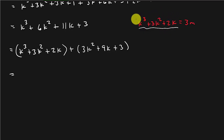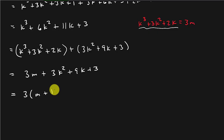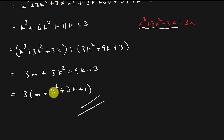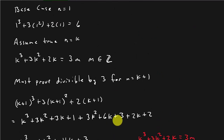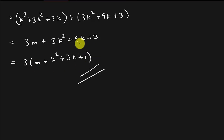So if we look at this, we assume that k cubed plus 3k squared plus 2k is equal to 3m. So I'm going to replace all of that with 3m, plus 3k squared plus 9k plus 3. Now I can factor a 3 out of that last part. And there you have it — because m is an integer and k is a positive integer, this whole expression is some integer times 3, so it's divisible by 3.